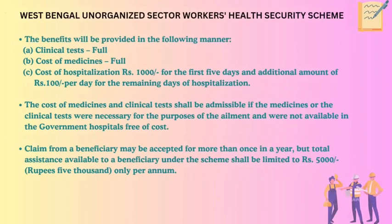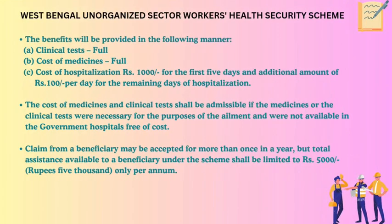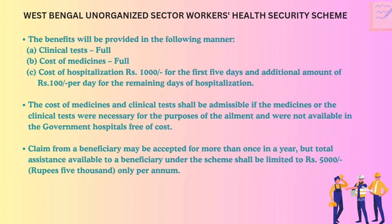West Bengal Unorganized Sector Workers Health Security Scheme: benefits include full cost of clinical tests, full cost of medicines, full cost of hospitalization — 1,000 rupees for the first five days, plus an additional 100 rupees per day for the remaining days of hospitalization. The cost of medicines and clinical tests is admissible if they were necessary for the ailment and were not available in government hospitals free of cost. Claims from a beneficiary may be accepted more than once in a year, but total assistance is limited to 5,000 rupees per annum.